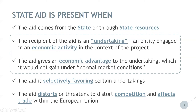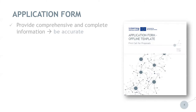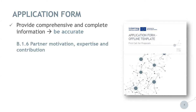In order to assess the presence of State Aid in projects, information provided in the application form is very important. Project applicants are asked to provide comprehensive and complete information. In section B.1.6, next to the partners' thematic competences and experience, please also provide full information on the main business of the partner organisation, as well as whether it normally performs economic activities — that is, whether it offers goods or services on a market. Remember that not only profit-making companies perform economic activities. Also make sure that the role, involvement, contribution, and main activities of each project partner in the project proposal are well described and the provided information is complete.